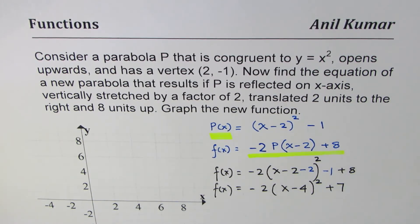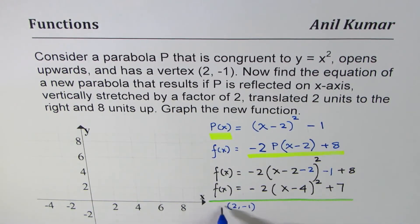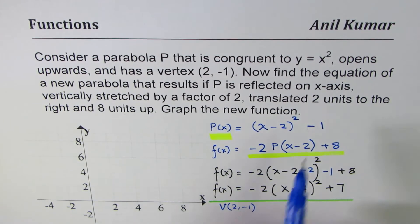Another way to look into this is kind of like this. We already have an equation, I am just giving you an alternate way to check. What we are also given that the vertex is (2, -1). So this is the vertex of the parabola given to us. After doing all these transformations, the vertex changes its position.